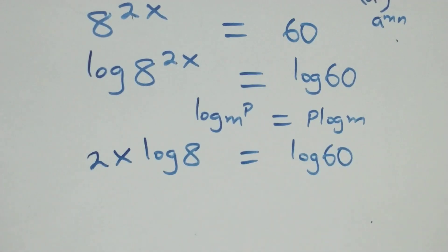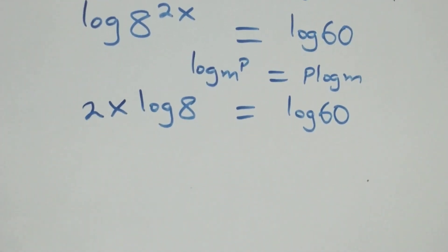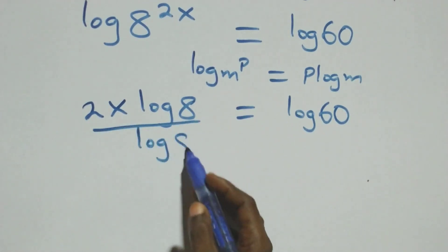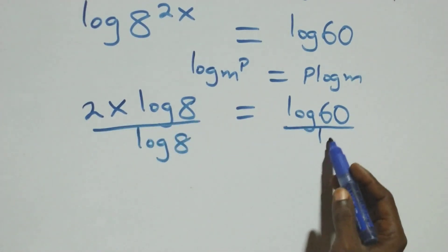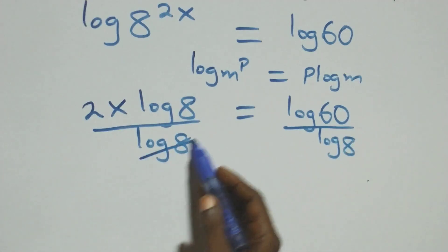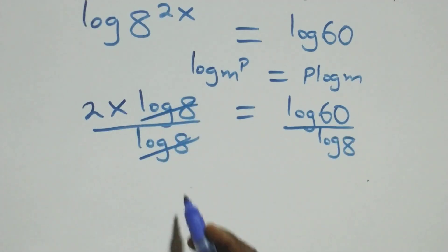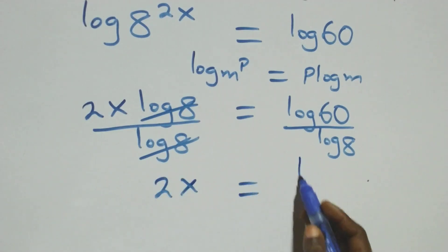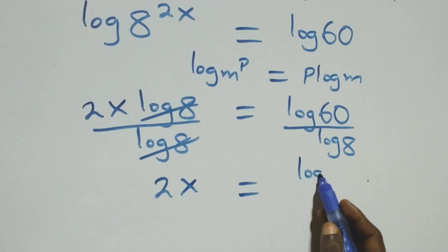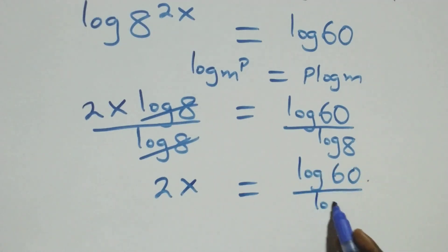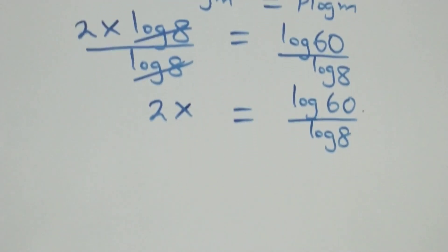The next step: we divide both sides by log 8. Dividing this side and also this side by log 8, the log 8 cancels, and we have 2x left equals log 60 over log 8.